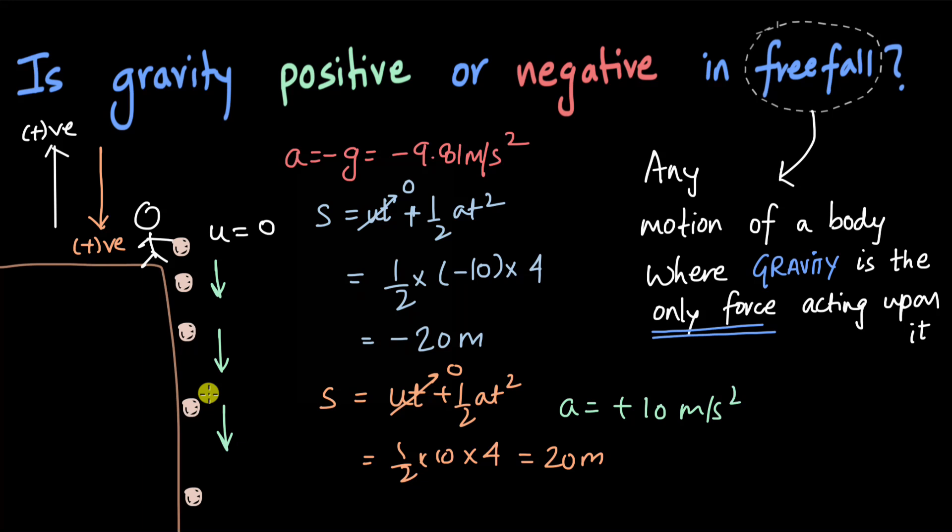So really, it all depends on which direction you take as positive and which direction you take as negative. Is gravity positive or negative in free fall? It depends: if the acceleration due to gravity is in the same direction as your chosen positive direction, it is positive. If it is in the opposite direction, it is negative. It depends entirely on your chosen sign convention and how the acceleration due to gravity is oriented relative to that.